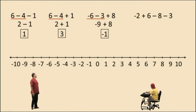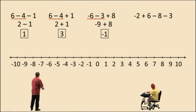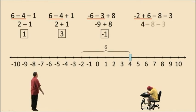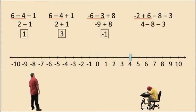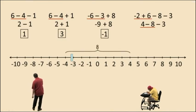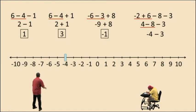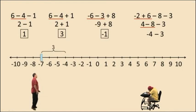Now let's do this problem: negative 2 plus 6 subtract 8 subtract 3. We've got to work left to right. Negative 2 plus 6 is positive 4. Now we do 4 subtract 8, that gives us negative 4. And now negative 4 subtract 3 — we move 3 units to the left — and we end up at negative 7, and that is our result.